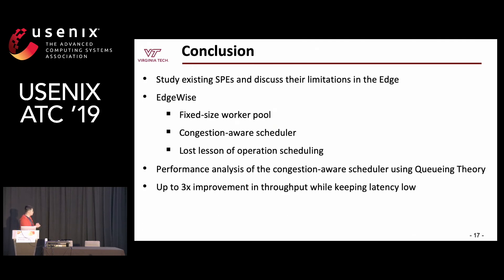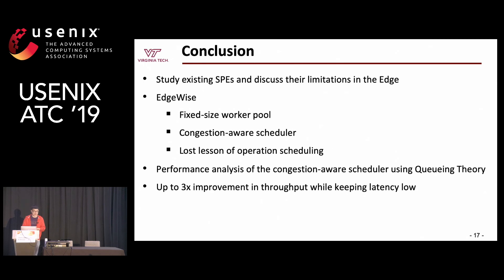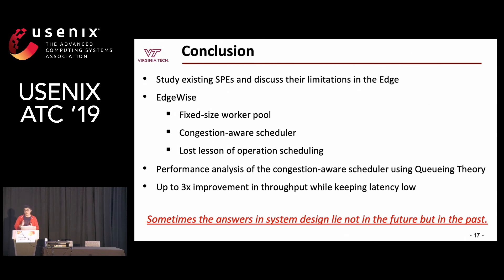To conclude: we studied existing stream processing engines and their limitations at the edge. We propose Edgewise, which uses a fixed-size thread pool and a congestion-aware scheduler. We rediscovered a lost lesson of operation scheduling from the database community. We performed a queuing-theory performance analysis of the congestion-aware scheduler. We achieved up to three times improvement in throughput while keeping latency low. The lesson from this project is that sometimes the answers in system design lie not in the future, but in the past.